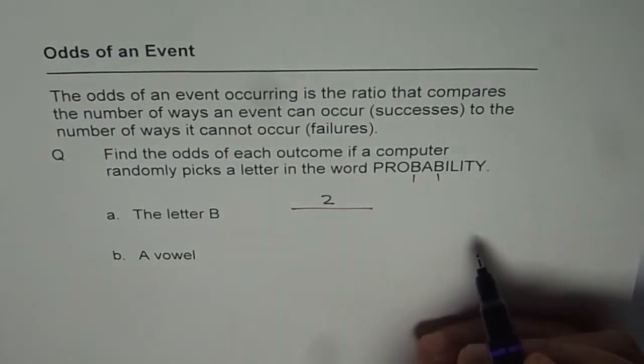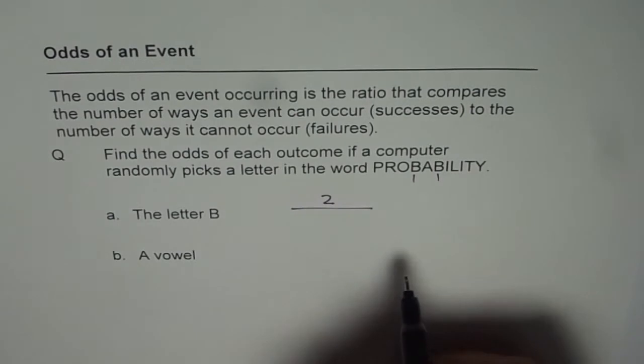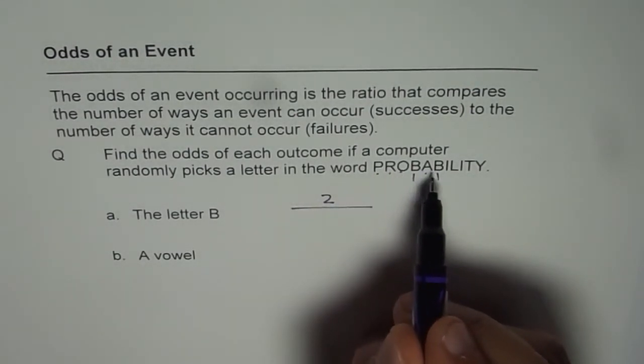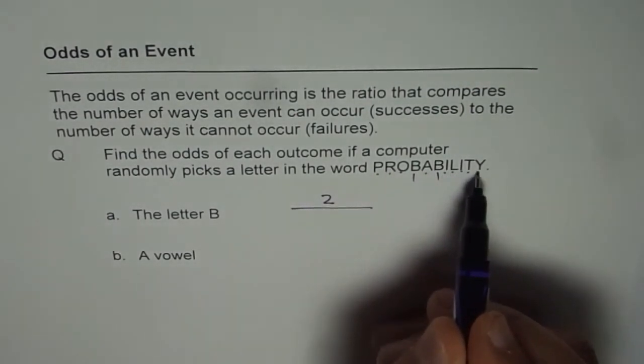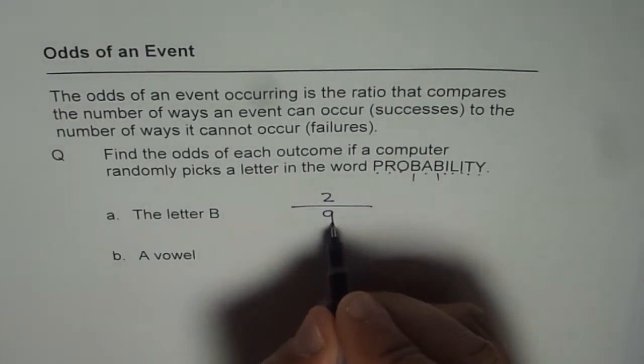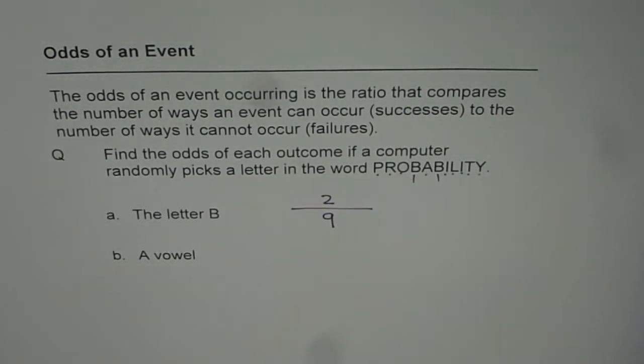And failures are how many? All the rest of the words are failures. So 1, 2, 3, 4, 5, 6, 7, 8, 9. So 2 over 9 is odds of the event.